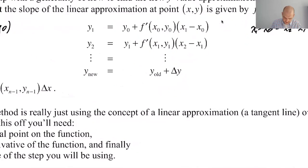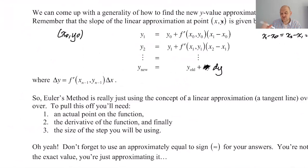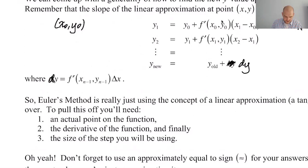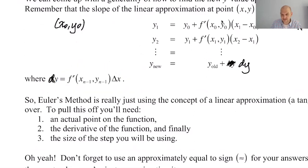I'm going to use dy instead of delta, because we're approximating the change — delta y is usually the actual change. So dy is always the derivative at the previous point times delta x. Delta x and dx are going to be the same value, so you don't need to worry about that.